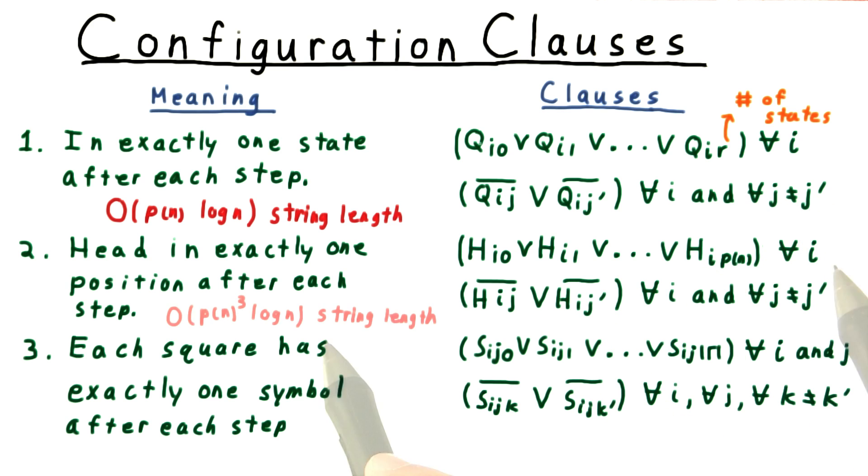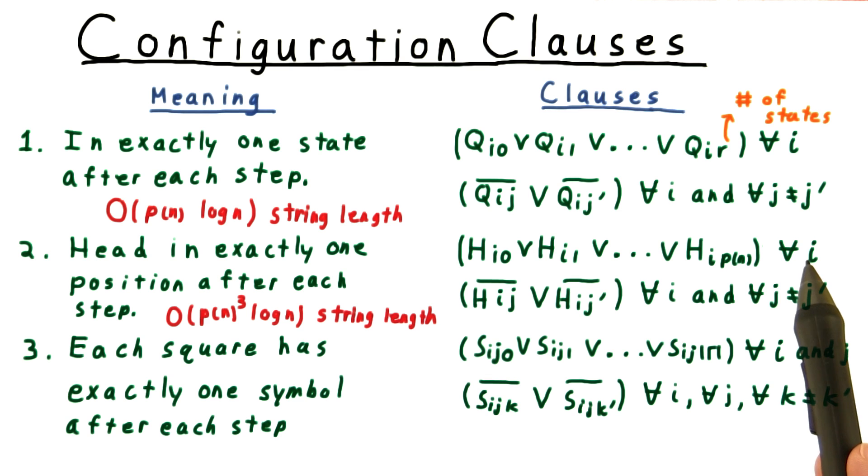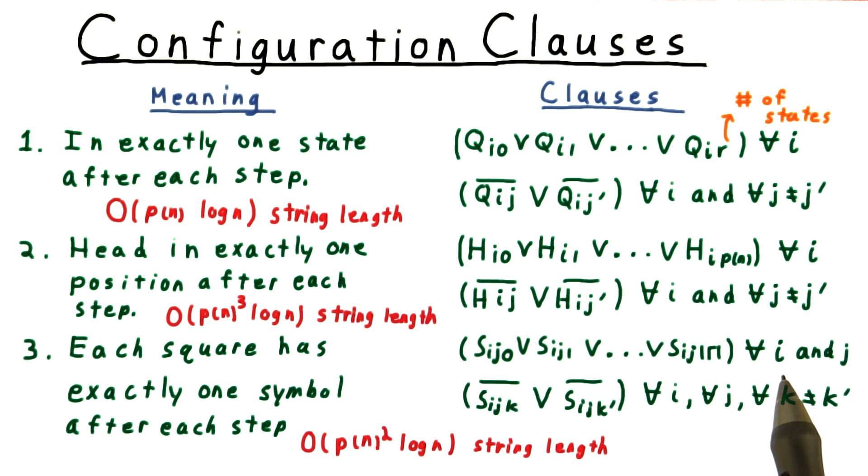For the head position, we have order p of n cubed log n string length. One factor of p comes from the number of steps, and we have two coming from all pairs of head positions. There are order p squared combinations of steps and squares, so this family of clauses requires order p squared log n length as well.